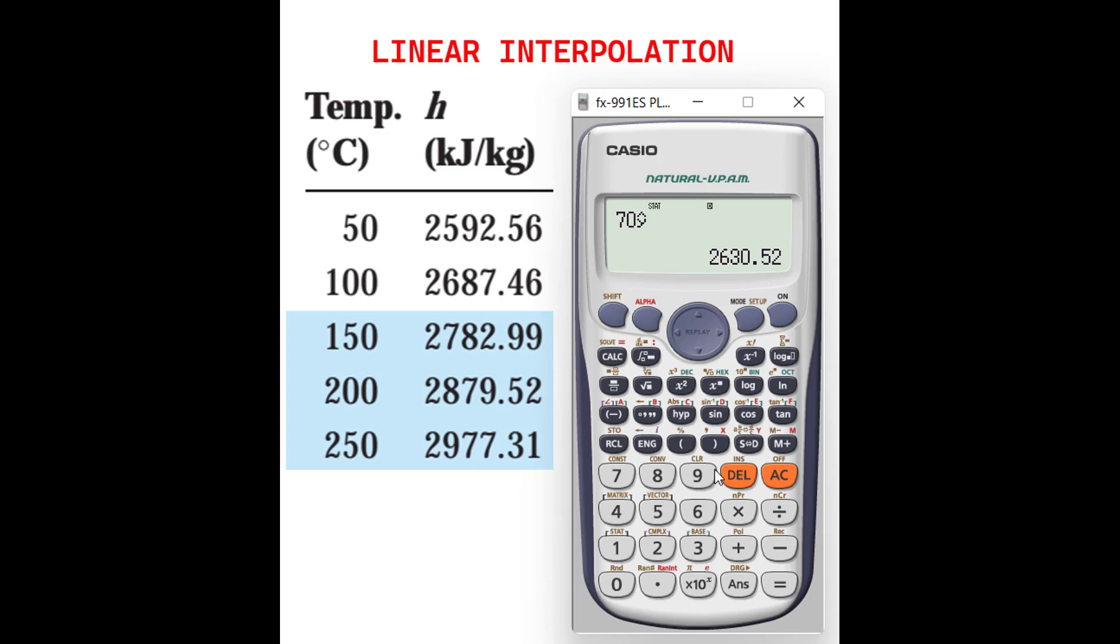Now let's say we want to have the enthalpy value at 90 degrees C. Again press AC, shift, 1, regression, 5, then again 5, and we want to have at 90, so 90, press y-cap, and equal.